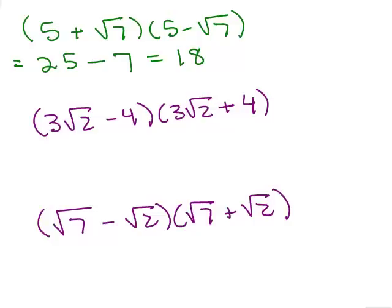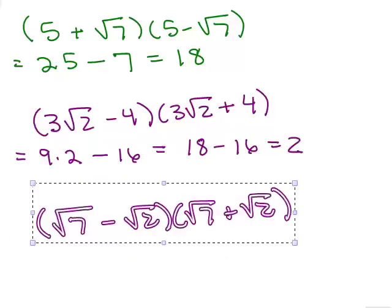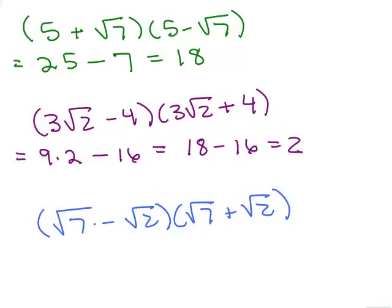For the second one, same thing — the outer and inner terms are opposites because the only difference between the two binomials is the sign. So I have 3 square roots of 2 times 3 square roots of 2, which is 9 times 2, minus 4 times 4 which is 16. So I get 18 minus 16, which is 2. For the last one, the outer term is plus square root of 14 and the inner is minus square root of 14 — those cancel. I end up with square root of 7 squared minus square root of 2 squared, which is 7 minus 2, which is 5.